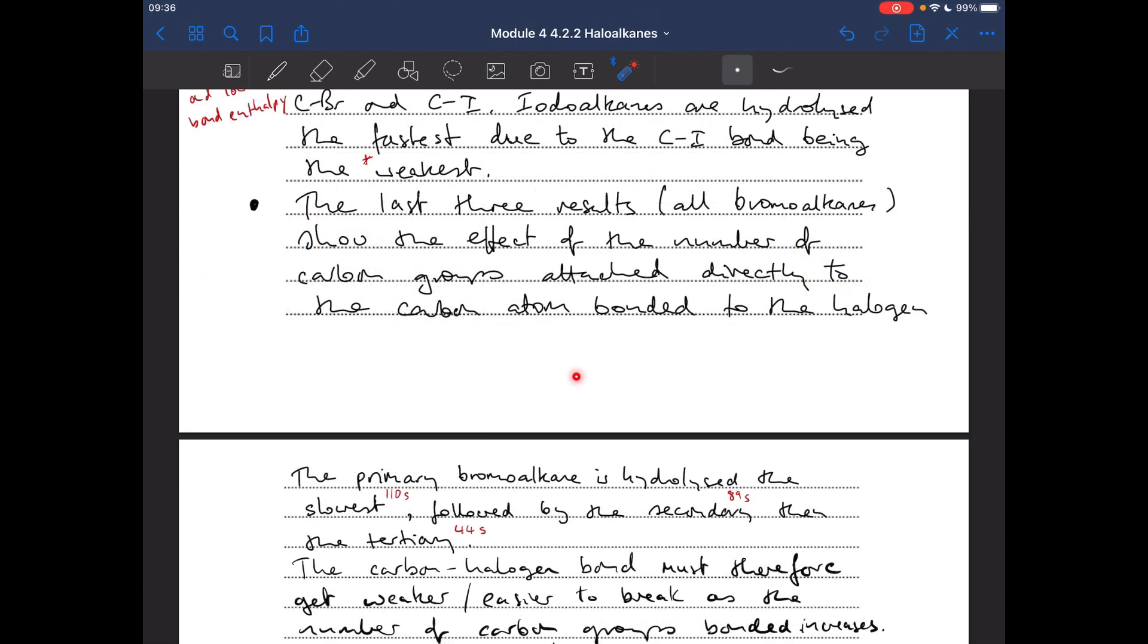So here's my answer for that bit. I'm saying the last three results, all bromoalkanes, show the effect of the number of carbon groups attached directly to the carbon atom that's bonded to the halogen. The primary bromoalkane is hydrolyzed the slowest. So I'm quoting the time from the table - it's really important to do that. 110 seconds, followed by the secondary at 89 seconds. And then finally, the tertiary is the fastest at 44 seconds. So an explanation for the times, something like this: The carbon-halogen bond must therefore be weaker or get weaker or easier to break as the number of carbon groups bonded increases.